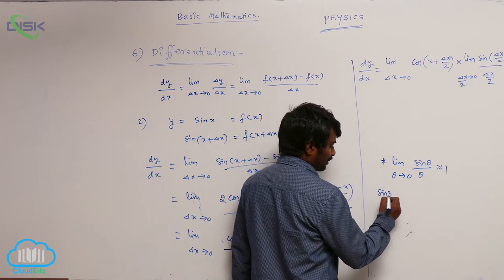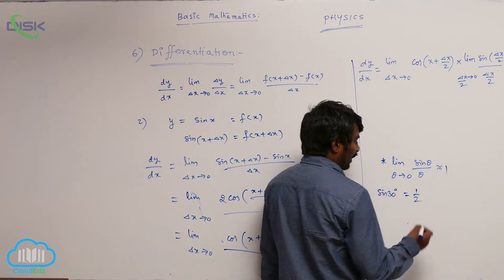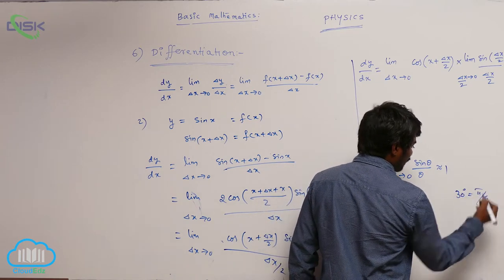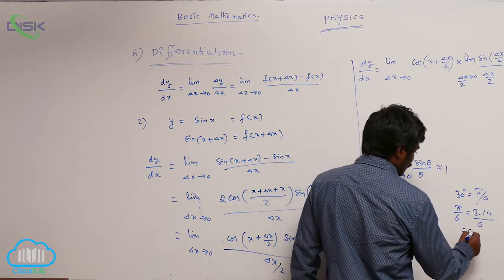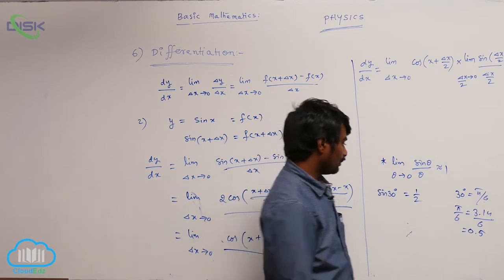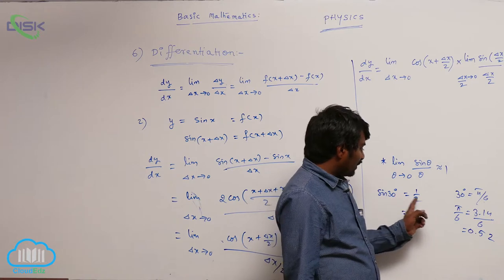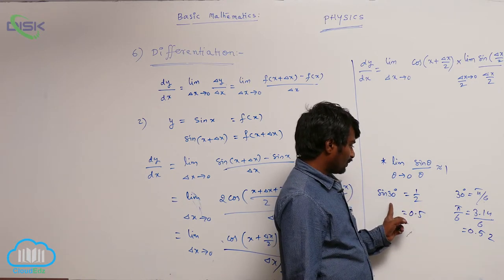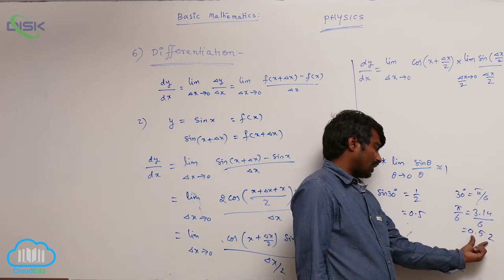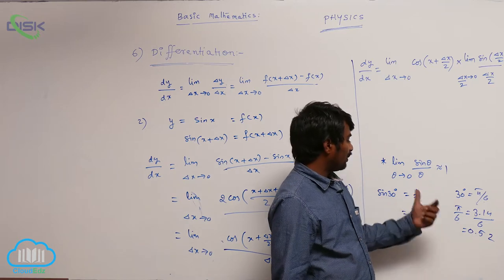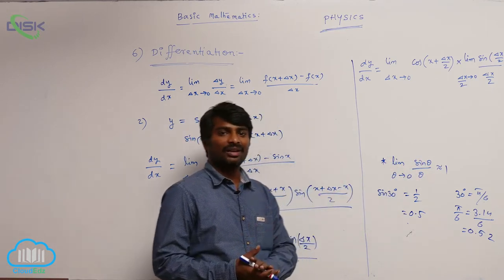Let me clarify this. Sin 30 degrees — sin 30 degrees is how much? 1 by 2. I can take 30 degrees as pi by 6 radians. So this pi by 6 value — 3.14 by 6 — what you get is approximately 0.52, and the exact value of sin 30 is 0.5. So instead of calculating sin 30 degrees, if I take that angle in radians and calculate it, you get the same value, and it is more correct when theta is very small.